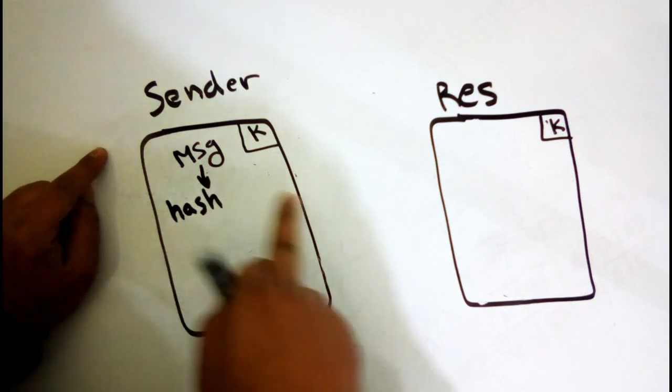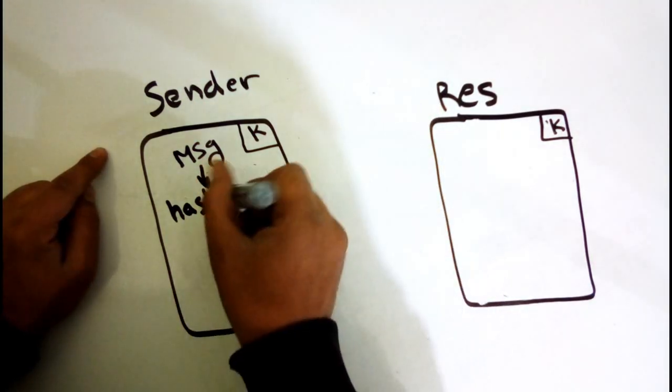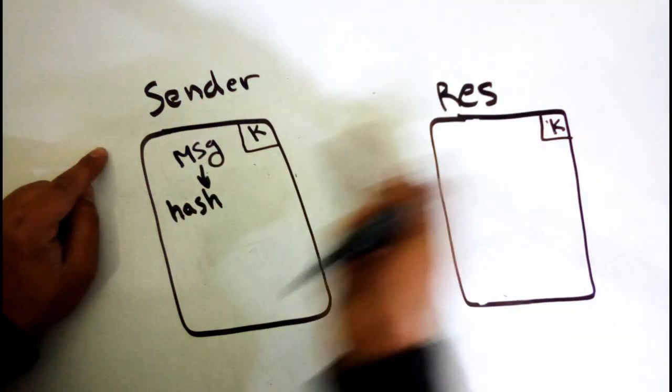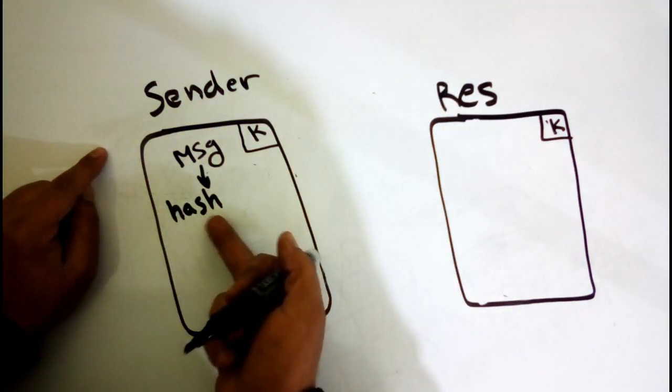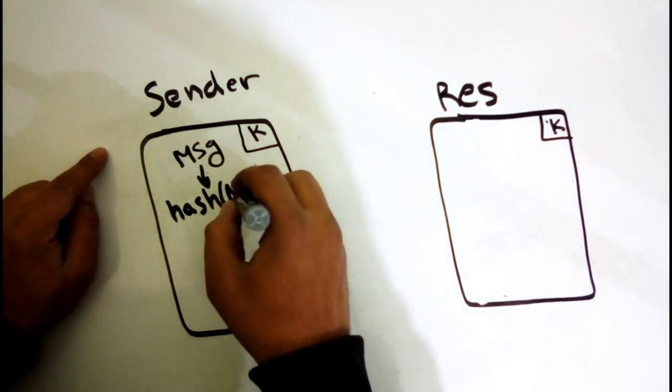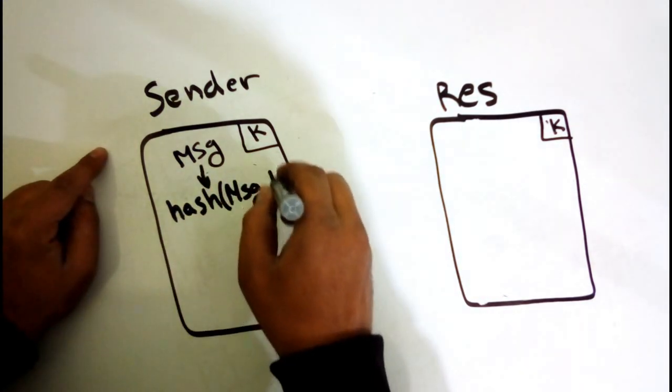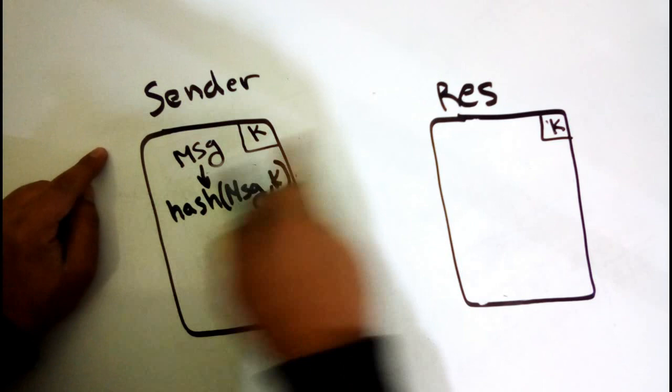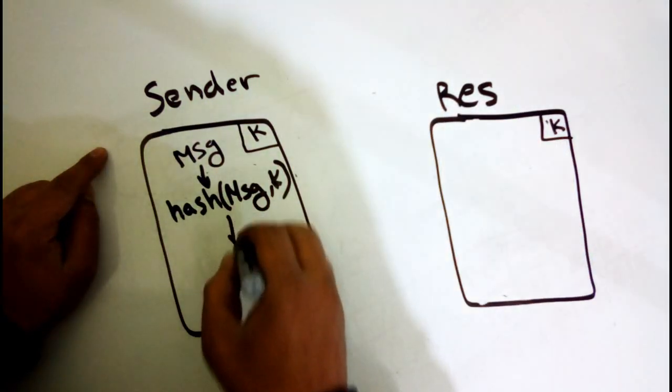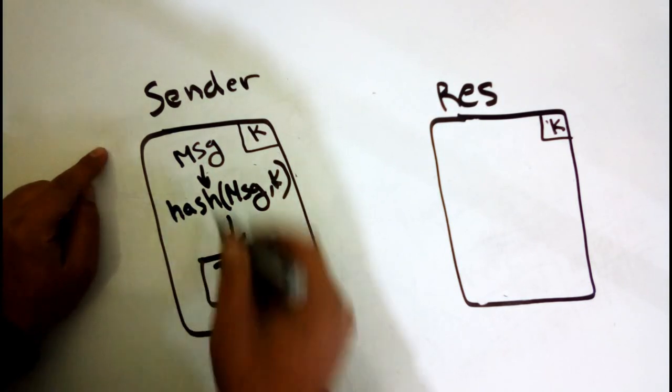It's a public function, so everybody knows it. The sender and the receiver know this function and how it works. Hash the message with the key, which is the common key between the sender and the receiver. This generates a tag.